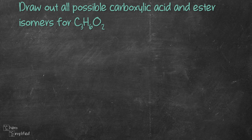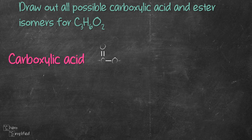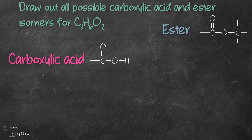Quick recap: the carboxyl group has a C double bond O, OH group, whereas ester has a C double bond O, OC group. The difference between carboxylic acid and ester is that carboxylic acid has an H connected next to an O, whereas ester has a C connected next to that O.